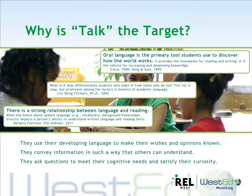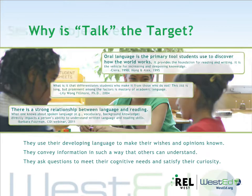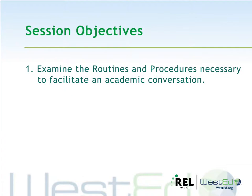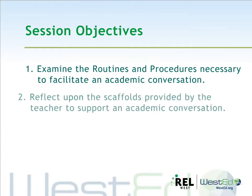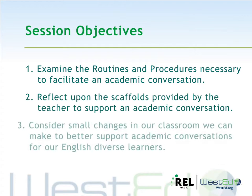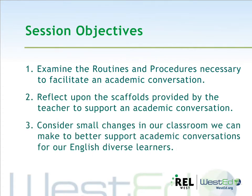In this session, we take the concepts about procedures and routines from the first two sessions and examine the strategies through a primary classroom lens. The objectives are to examine the routines and procedures necessary to facilitate an academic conversation, reflect upon the scaffolds provided by the teacher to support an academic conversation, and consider small changes we can make in our classroom to better support academic conversations for English diverse learners.